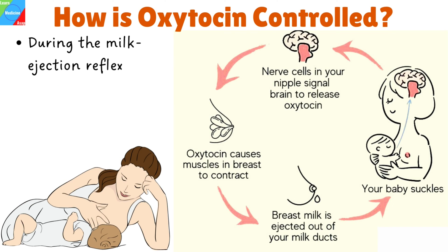Another way by which oxytocin is controlled is during the milk ejection reflex. When the nipple is stimulated during nursing, oxytocin is secreted into the blood more frequently and produced at higher levels, which causes milk to be released into the breast. This cycle stops when the baby stops suckling.